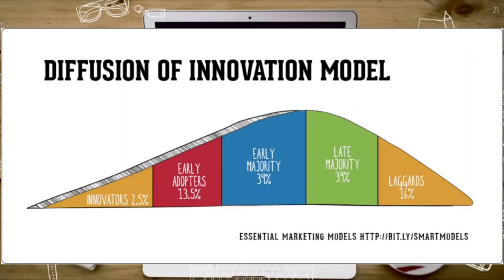What is the Diffusion of Innovation theory or model? We also have diffusion research, which is interrelated with it. It examines how ideas are spread among groups of people. Diffusion of Innovation shows how an idea or innovation diffuses among people. It goes beyond the two-step flow theory, centering on the conditions that increase or decrease the likelihood that an innovation — a new idea, product, or practice — will be adopted by members of a given culture.